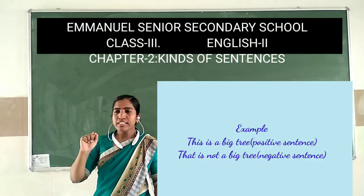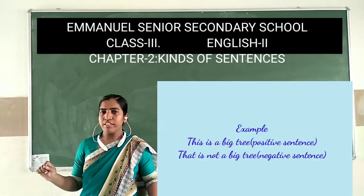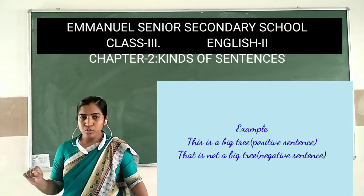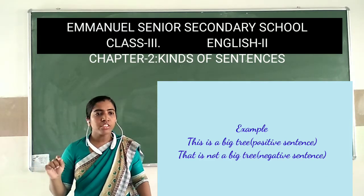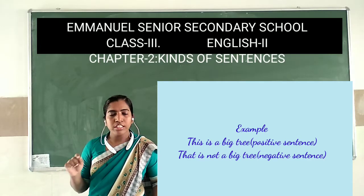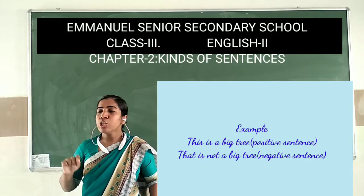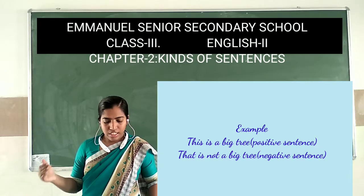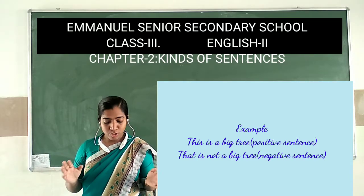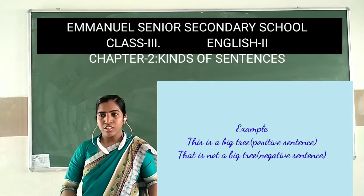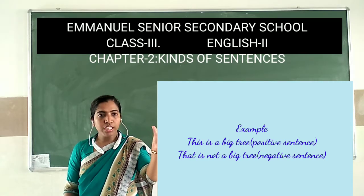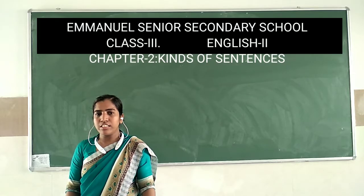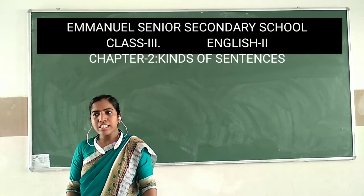For example: 'This is a big tree' — it comes under the positive sentence because the words no or not are not used in that sentence. The next one is: 'That is not a big tree' — there the word not is used, so it's a negative sentence.